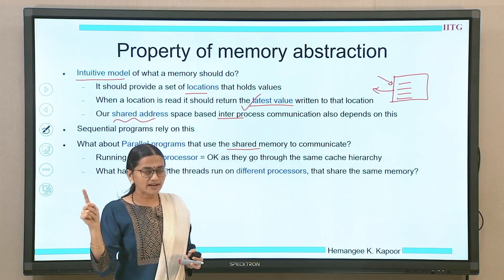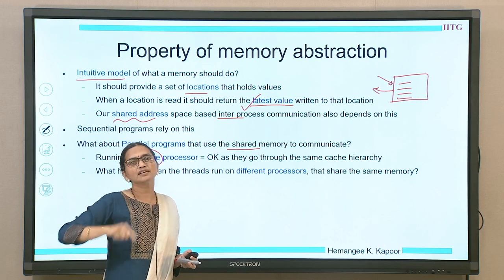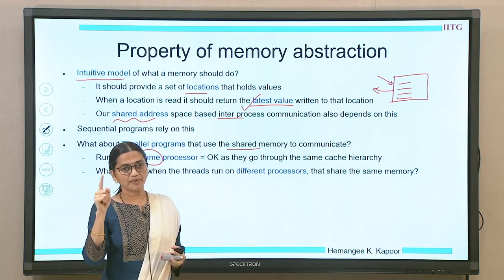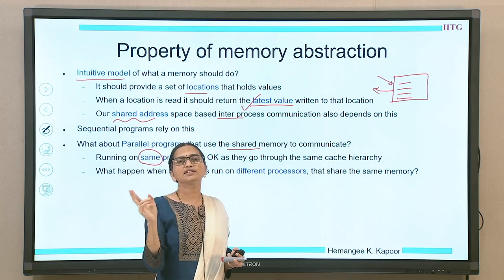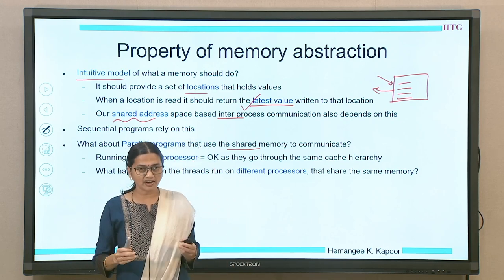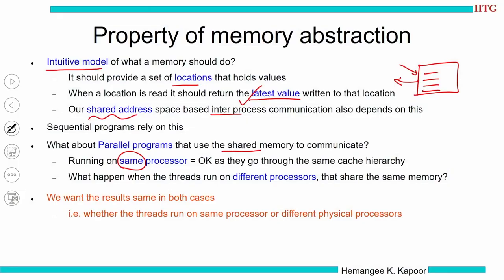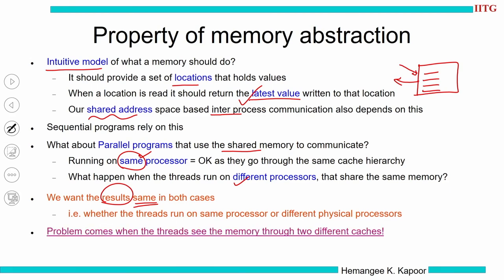But when a parallel program runs across different processors, it will go through different caches. The cache hierarchy will be independent for the two threads, and that might create problems. Our objective is that whether they run on the same processor or different processors, the end results have to be the same. We want the final result to be identical whether the program runs on a single processor or across multiple processors.